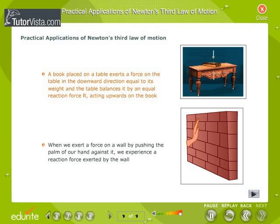A book placed on a table exerts a force on the table in the downward direction equal to its weight, and the table balances it by an equal reaction force R acting upwards on the book. When we exert a force on a wall by pushing the palm of our hand against it, we experience a reaction force exerted by the wall.